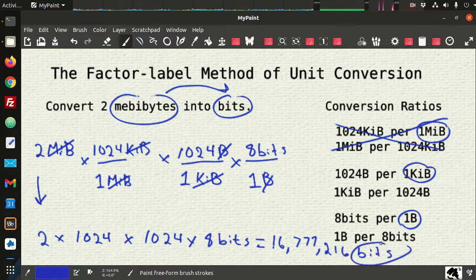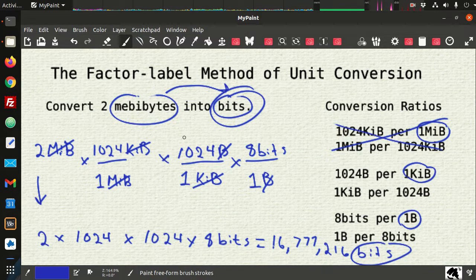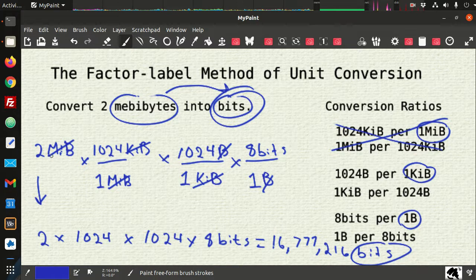So we got our goal. This was our goal. So that's the idea behind factor label method of unit conversion. It's just ratios and you start somewhere and you're multiplying by one each time. So you're not changing the amount. All you're changing is the unit and the units cancel. So hopefully that helps you with some of your future computer science conversion problems.